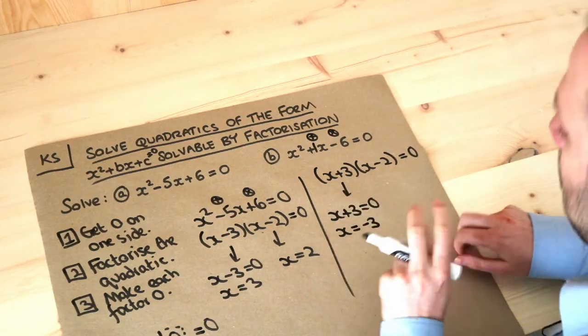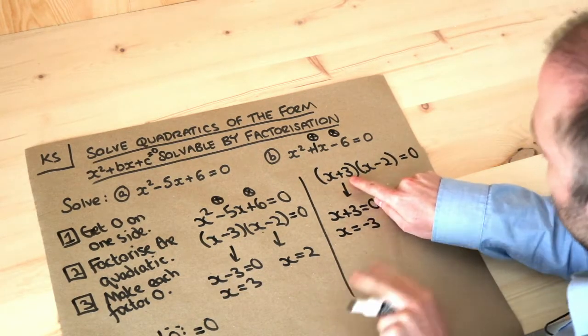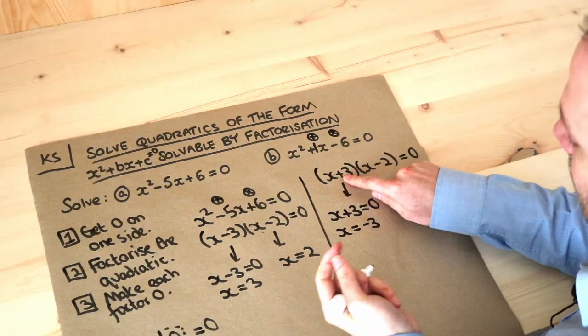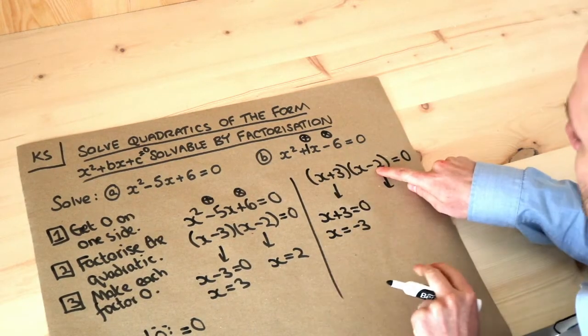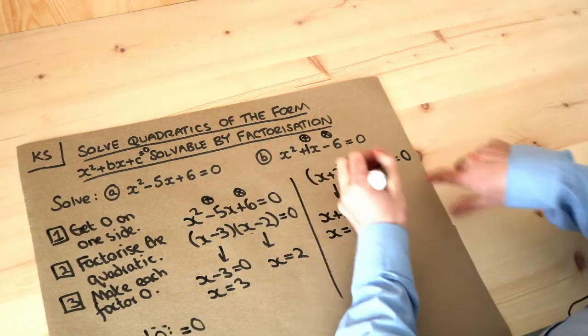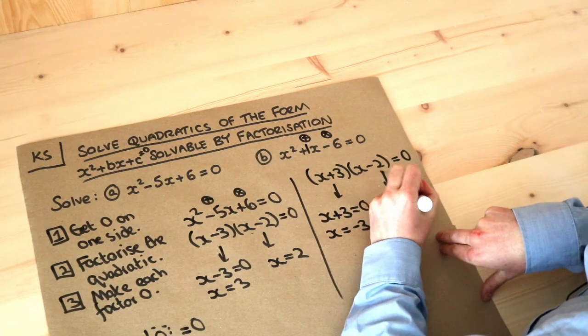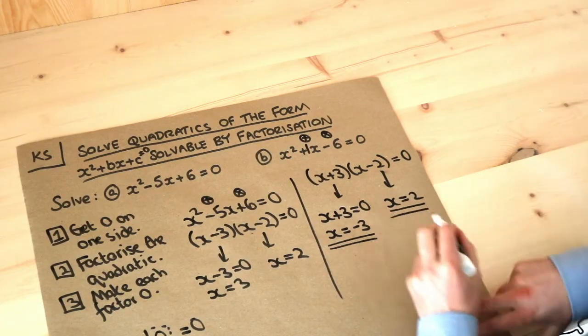And remember the quick way I said is whatever this number is you negate it. So positive becomes negative, we get minus three as the solution. And this one here, if we negate it, negate minus two it becomes positive two. So the other solution is x is two. And those are our solutions.